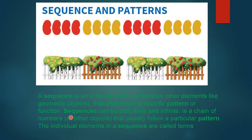Sequences can be both finite and infinite. Finite means numbers which can be counted, and infinite means numbers that cannot be counted. A sequence is a chain of numbers or any other objects that usually follow a particular pattern. The individual elements in the sequence are called terms.